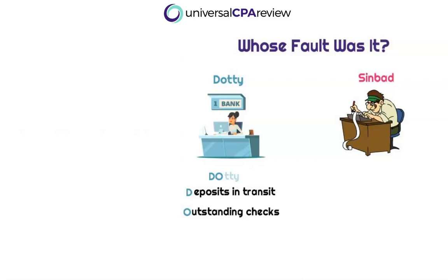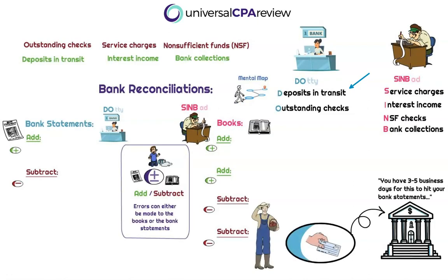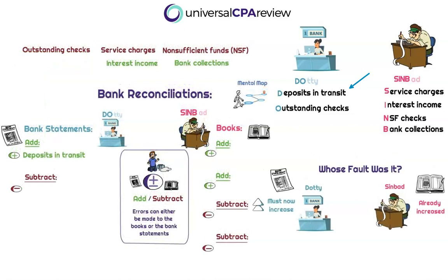The only time there are adjustments made to the bank statements is if there are deposits in transit or outstanding checks. Deposits in transit — the D in Dottie's name — means Farmer Boy Eggs went to the bank and deposited their checks, but they're told it takes three to five business days for this to hit the bank statements. The bookkeeper already recorded the cash received correctly, so we need to add deposits in transit to the bank statements until it hits, because right now the bank statements aren't properly reflecting that cash was deposited.